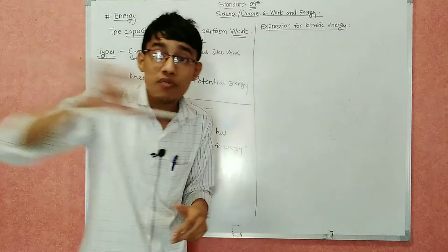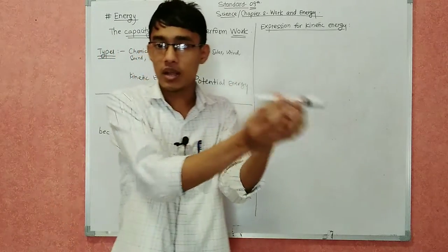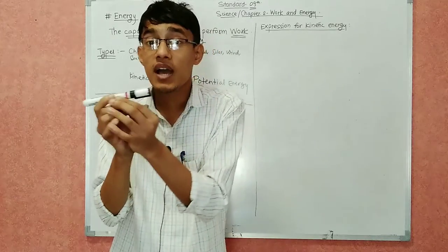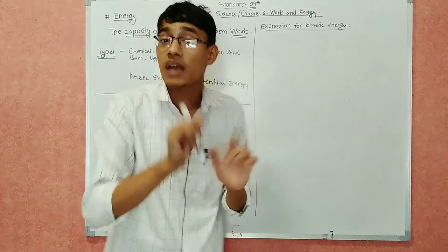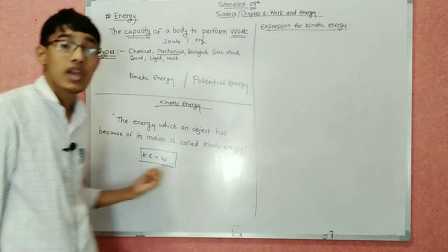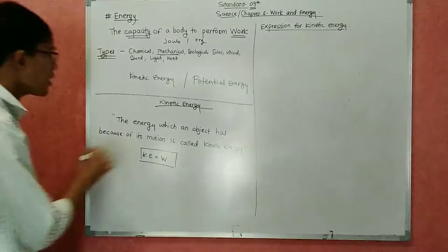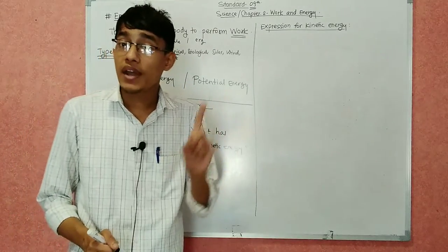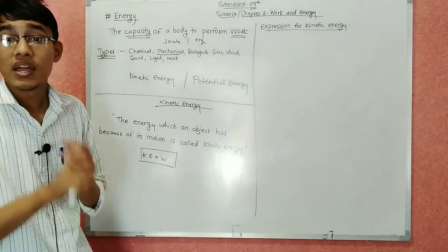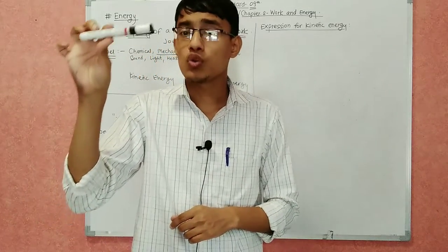Object motion perform कर रहा है, इसका मतलब वो work कर रहा है. अगर object ने displacement perform किया है और उस motion को perform करने के लिए force भी applied हो रहा है, तो obviously object ने work perform किया है. इसका मतलब है कि kinetic energy work के बराबर होती है — KE equals W. Now we will derive the formula of kinetic energy, which is ½mv². Kinetic energy का formula ½mv² है और हम इसे इस lecture में derive करेंगे.